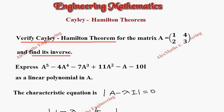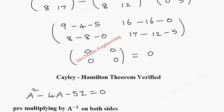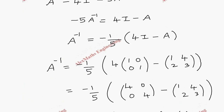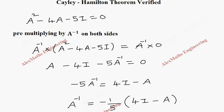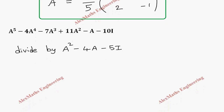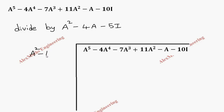Now in the third part of the question, we have to express A⁵ minus 4A⁴ minus 7A³ plus 11A² minus A minus 10I as a linear polynomial in A. We are going to divide this expression by the characteristic equation, that is A² minus 4A minus 5I equal to 0, using long division.